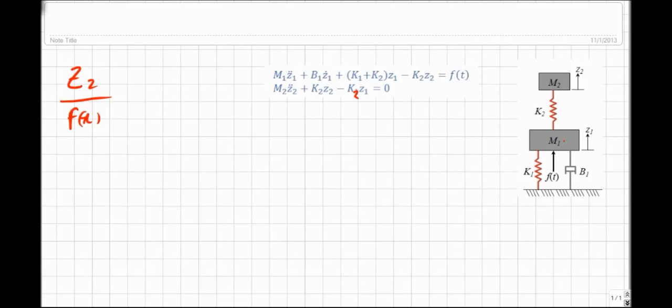I'm going to put these in S domain just because that's where we're going. And then I'll solve it. M1 S squared Z1, this is our first equation, plus B1 S Z1 plus K1 plus K2 Z1 minus K2 Z2, depending on what country you're from, equals F of S. And this K1 K2 here, that comes from...